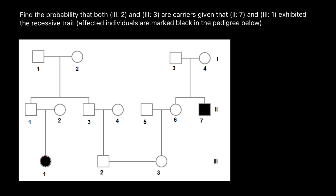Hello, and welcome to Nikolai's Genetics Lessons. Today's problem is: find the probabilities that both 3,2 and 3,3 — so third generation individuals 3,2 and 3,3 — are carriers, given that 2,7 and 3,1 exhibit the recessive trait. Affected individuals are marked black in the pedigree below.